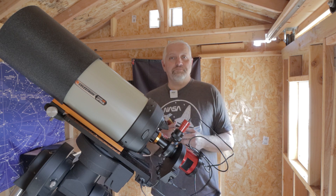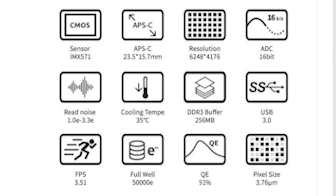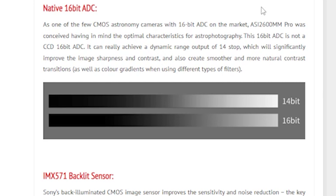So let's get started. The sensor is an IMX571 Sony sensor and that is an APS-C size sensor. The pixel size is 3.76 microns with a quantum efficiency of 91%. It's got a full well of 50,000e. But I think that the biggest spec that everybody's really concerned about is that it's got a native 16-bit ADC, and that gives a significant improvement to the image sharpness and contrast even over a 14-bit ADC.